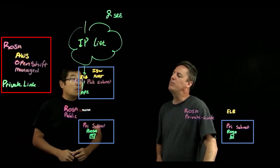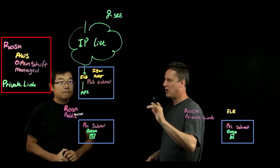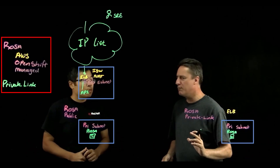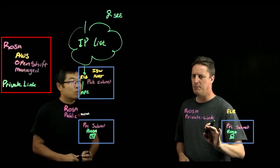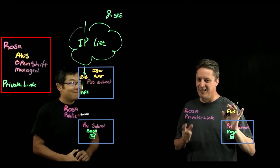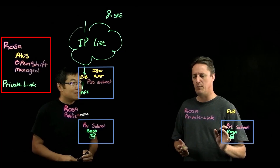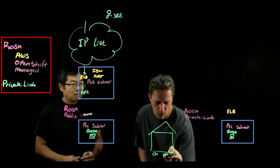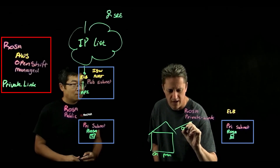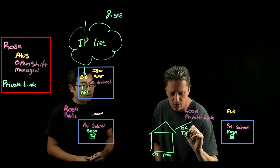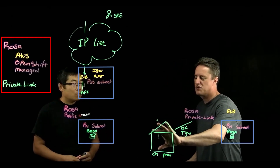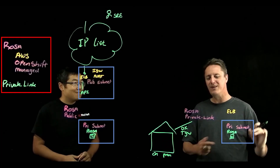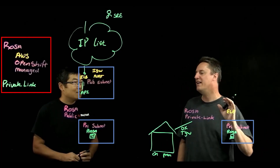With ROSA public implementations, the API endpoint and the OpenShift console are accessible to the outside world. Most customers want a much more private implementation and gravitate towards ROSA private link, which makes everything private — exposed only to the VPC it's deployed in. If a customer is on-prem, they'll likely have AWS Direct Connect or a transit gateway for communication from their internal organization to the cluster. But that doesn't help the SRE team — how do the SREs get in if there's nothing connecting them to that public space?